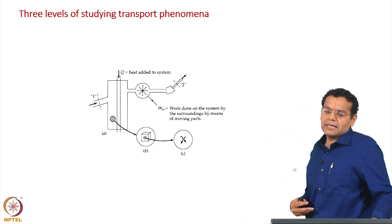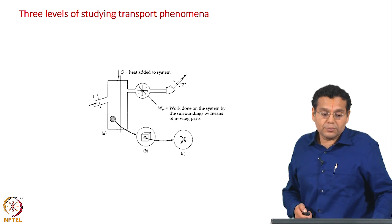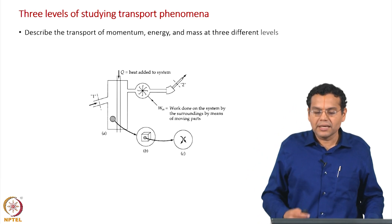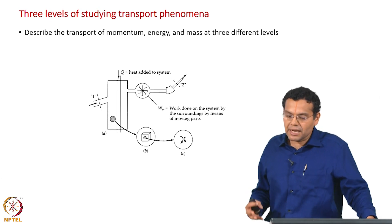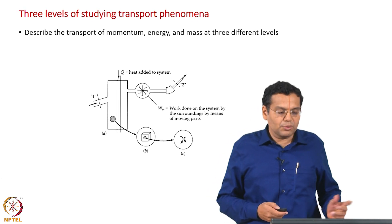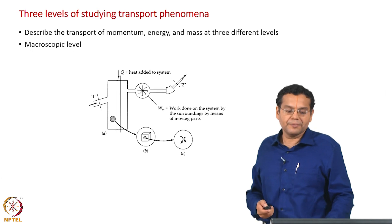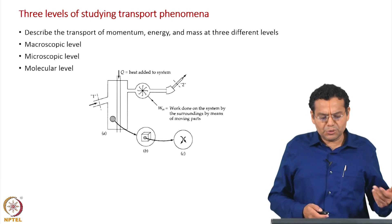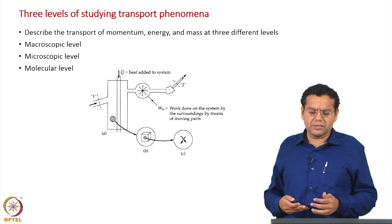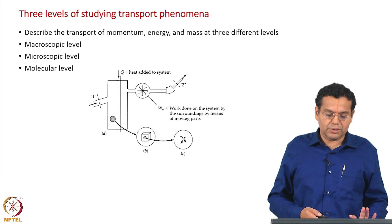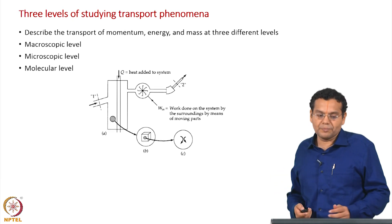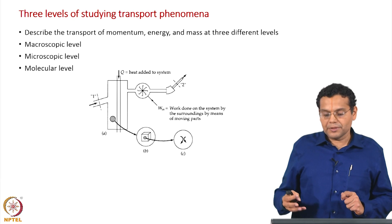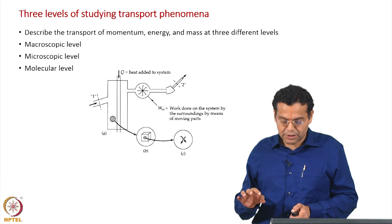Now, what are the three levels — a hierarchy — of studying transport phenomena? We can describe the transport of momentum, energy, and mass at three different levels. The first is the macroscopic level, then the microscopic level, and then the molecular level. Note that the use of words macro, micro, and molecular depends on the book being followed; we will use the nomenclature based on the books we follow in this course.